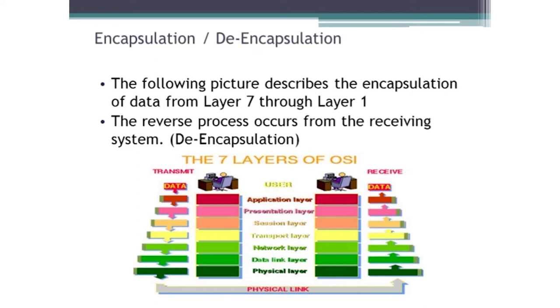A new layer 2 would be put on to match whatever its wide area network is going to be — whether frame relay, point to point, ATM, or whatever that case may be — and sending it on its way across the internet. That layer 2 keeps changing literally from hop to hop.